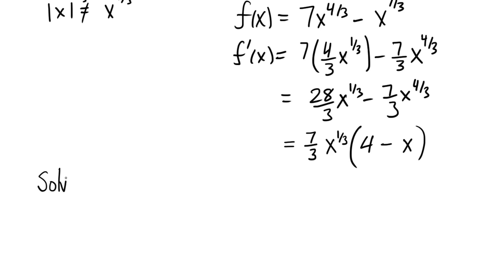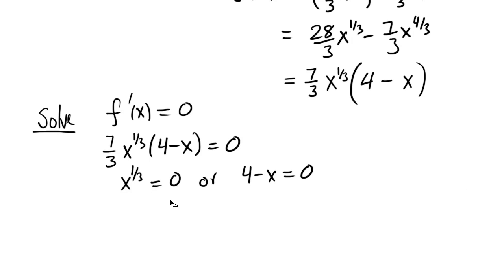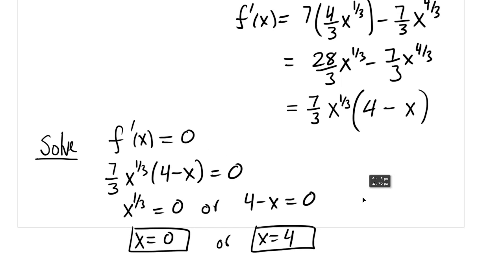We factored f prime of x. Now let's solve it equal to 0. That way we'll find our critical numbers. So we get 7 thirds times x to the 1 third times 4 minus x equal to 0. So that means either this is 0 or this is 0. If I cube both sides here, I come to the conclusion that x is 0 or x is equal to 4. So those are my two critical numbers, x equals 0 and 4.